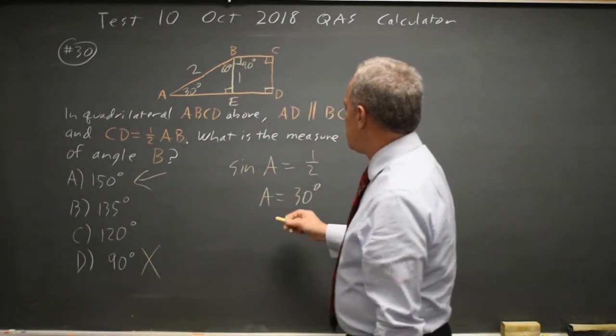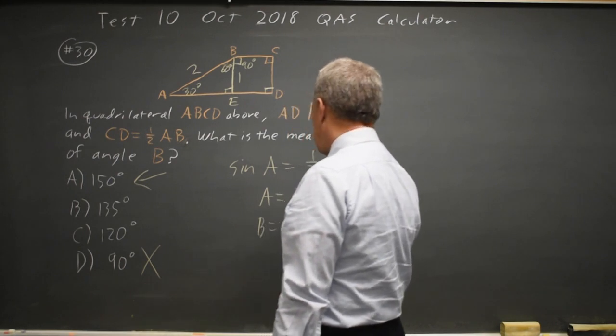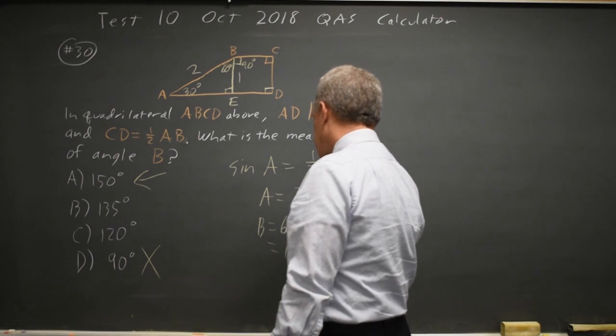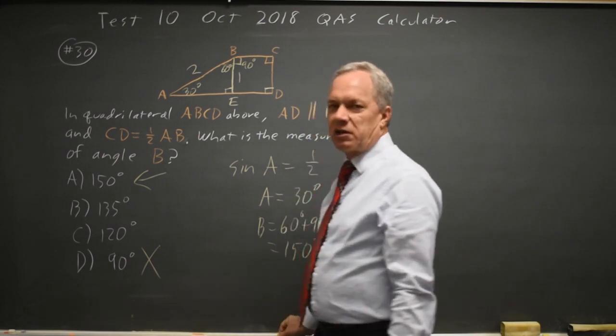So angle B equals 60 plus 90 degrees equals 150 degrees, the same answer I got from estimation.